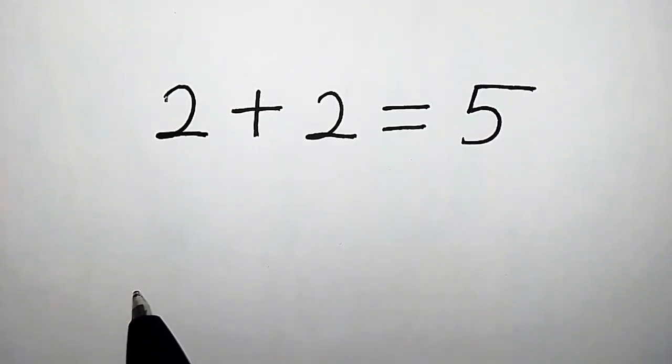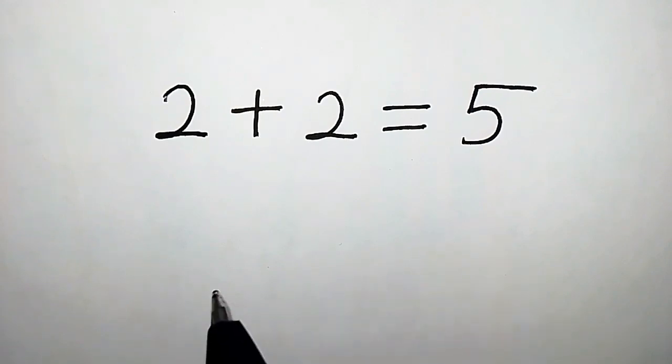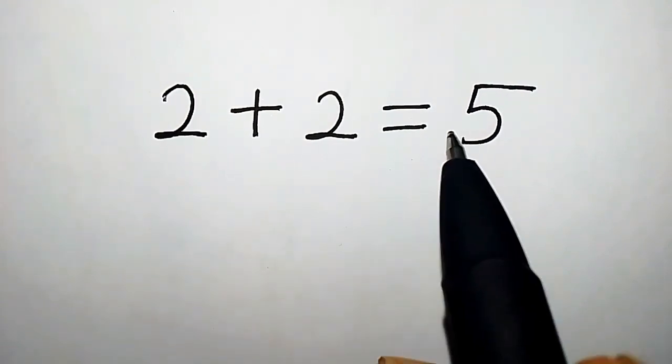2 plus 2 is equals to 5. But in real mathematical sense we all know that 2 plus 2 is equals to 4. But here we have a different case. How do we now show that 2 plus 2 equals to 5?